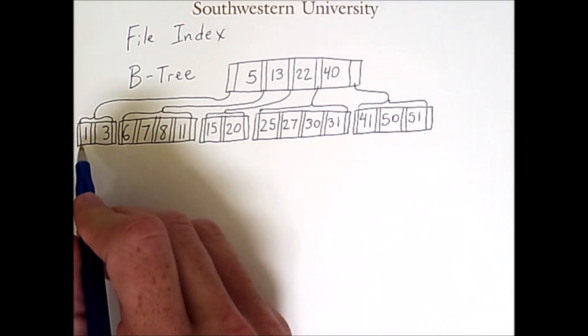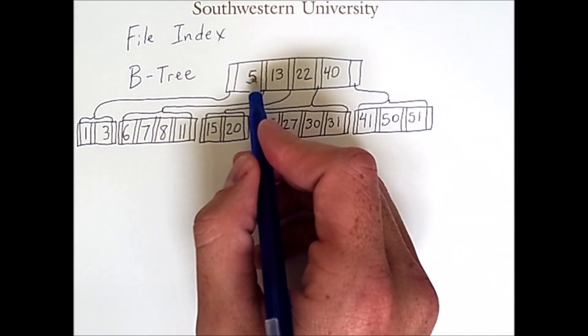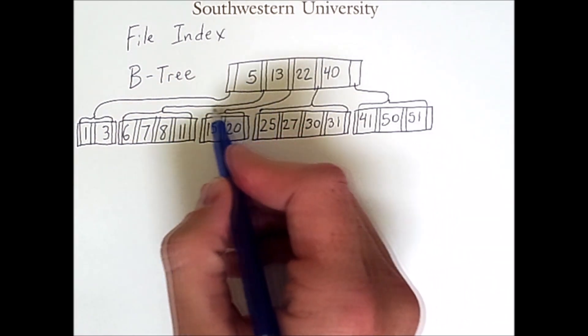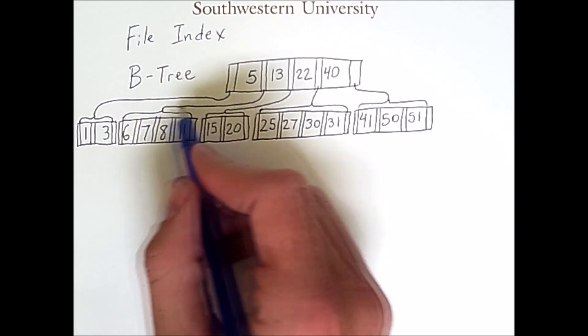So we can walk through this tree and see that we have key values, one, then three, then five, then we go down to this child, six, seven, eight, eleven, then back up.